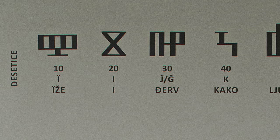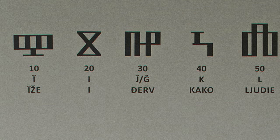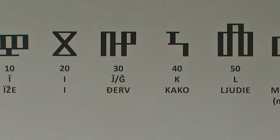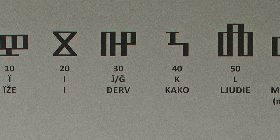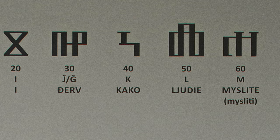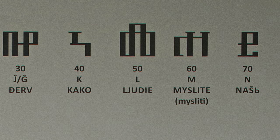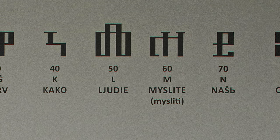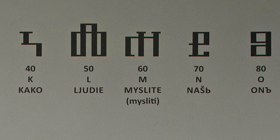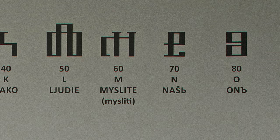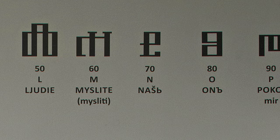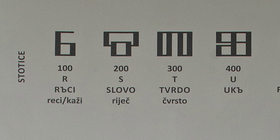Ten: I — Iže. Twenty: I. Thirty: J — Jerv. Forty: K — Kako — how. Fifty: L — Ljudje — humans. Sixty: M — Mislite — think. Seventy: N — Naš — our. Eighty: O — On — he. Ninety: P — Pi — Pokoj — rest.